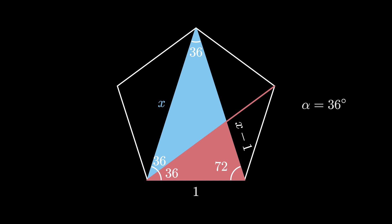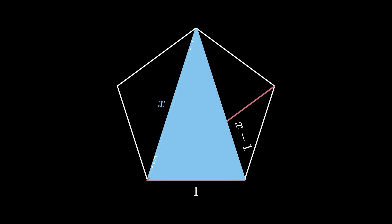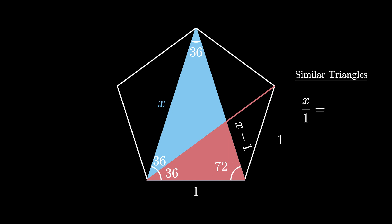But now we can use the fact that the two triangles shown, the red and the blue, are similar as they have exactly the same angle measurements. The fact that the two triangles are similar means that the ratio of their side lengths are equal, so that x divided by 1 must equal 1 divided by x minus 1.